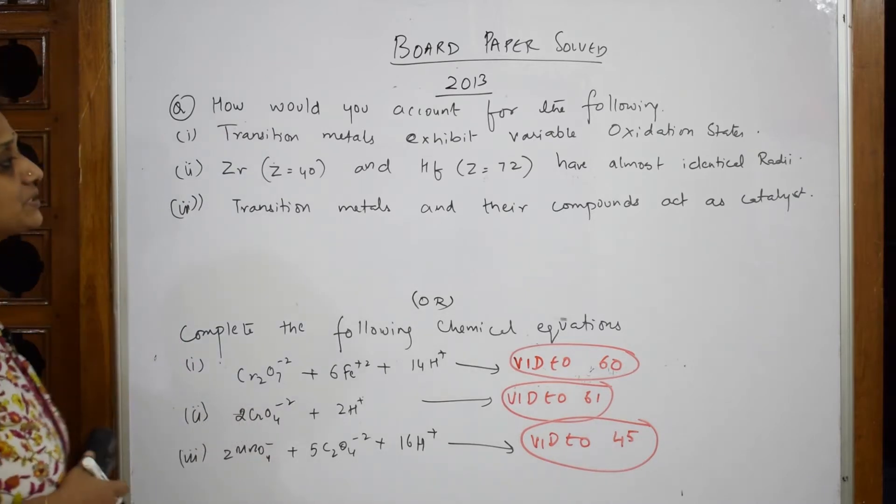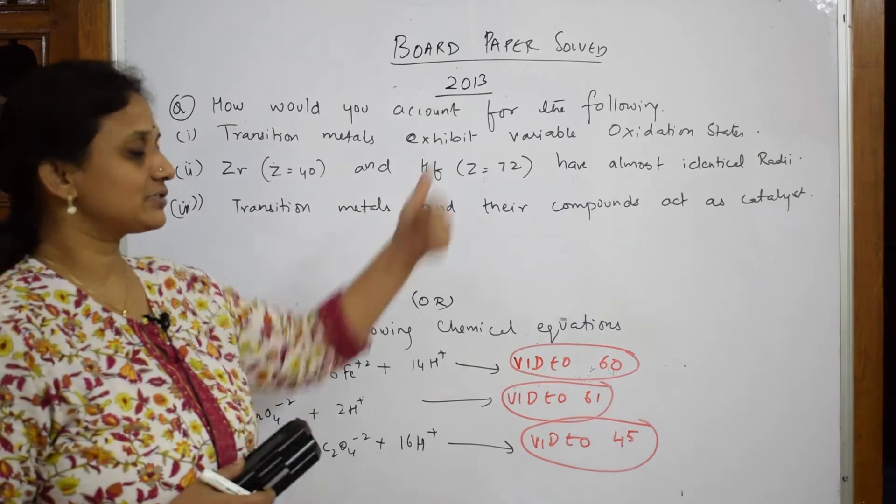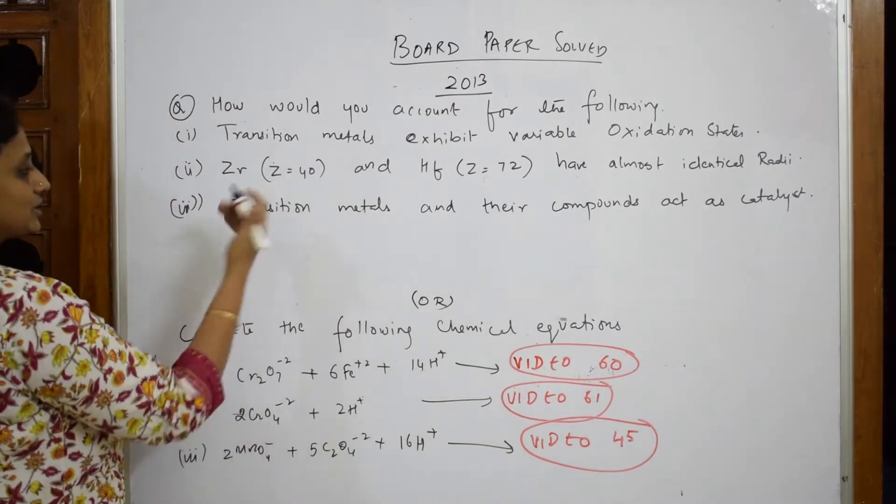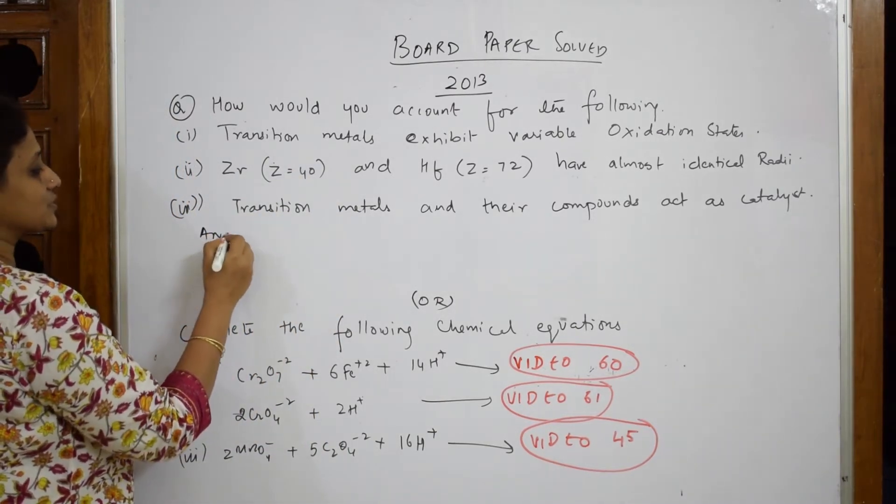In every question paper you're finding oxidizing property questions, completely converting Fe plus 2 to plus 3, Sn plus 2 to Sn plus 4. Please watch the videos. Let's come back. They've asked us transition metals exhibit variable oxidation state. When such a question is given to you, if they've given me only one mark, so simple. Have you already written? Let us write the answer for the first one.